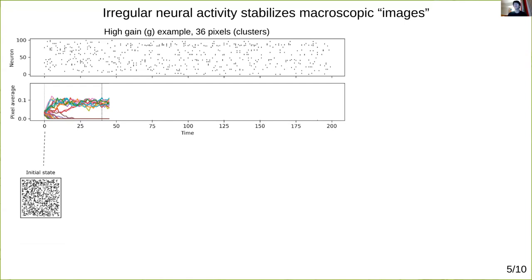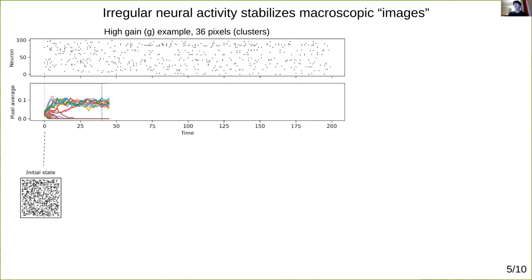However, if we look at the average neural activity in each pixel plotted here with one trace per pixel, something interesting happens. We start with all pixels about equally active. Those are our initial conditions, which you can see in a network snapshot here in the lower left.